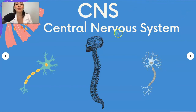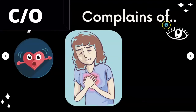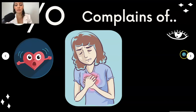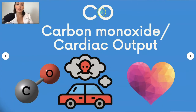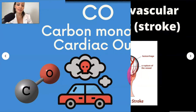CNS stands for central nervous system, which consists of the brain and the spinal cord. CO is 'complains of' — just as CC was chief complaint, CO indicates what the patient is presenting with, such as complains of chest pain. CO can also stand for carbon monoxide or cardiac output, so always ask for clarification.